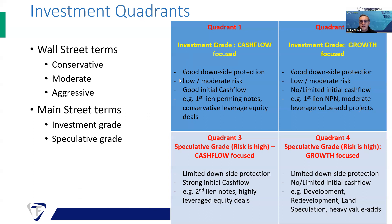Quadrant one deals have good downside protection — downside protection mechanisms vary, but you'll see examples shortly. They carry low to moderate risk and good cash flow. Examples include first lien mortgages or first lien deeds of trust — essentially performing notes and loans secured by real property in first lien position — at a conservative loan-to-value ratio. Some conservative equity deals with proper mortgage leverage, strong cash flow, and other characteristics of good downside protection also typically fall into quadrant one.